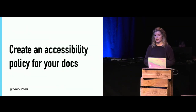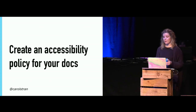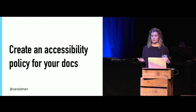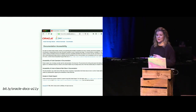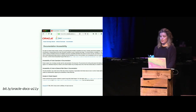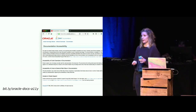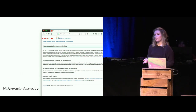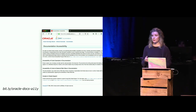We can also create and implement an accessibility policy specifically for our documentation. This can be anything from a formal document that you publish in your doc app to an internal set of standards that your team follows. Either way, this should be a statement that outlines your organization's or team's intentions towards your documentation's accessibility. Oracle has a really nice example — they have a dedicated documentation accessibility statement where they give warnings about things that screen readers might get wrong, such as conventions for writing code where some screen readers may not always read a line that consists solely of a bracket or brace.